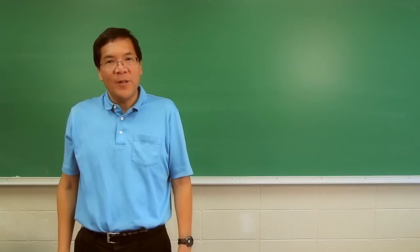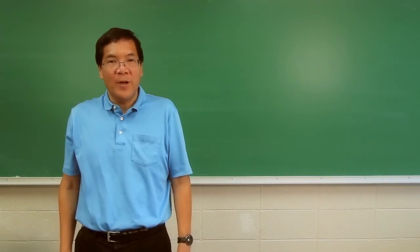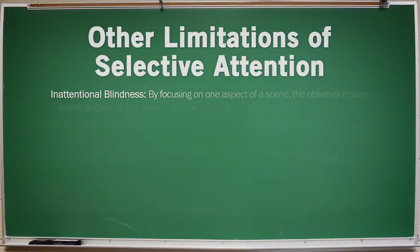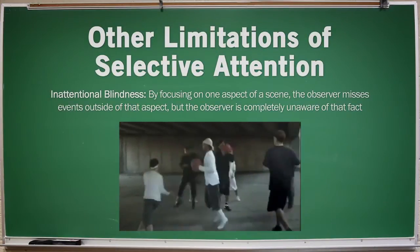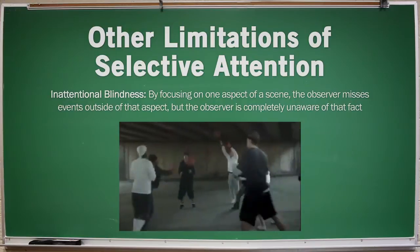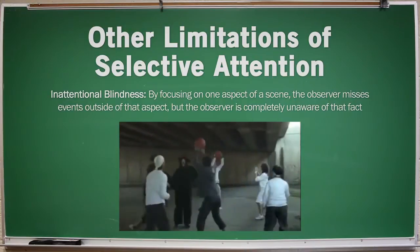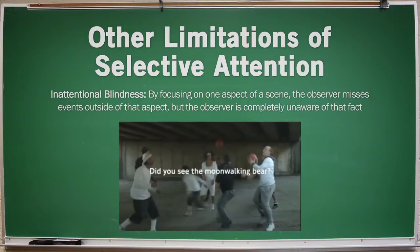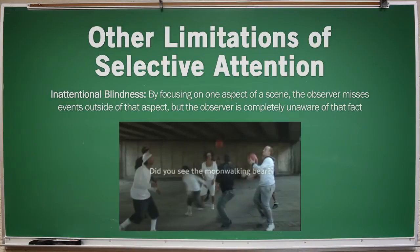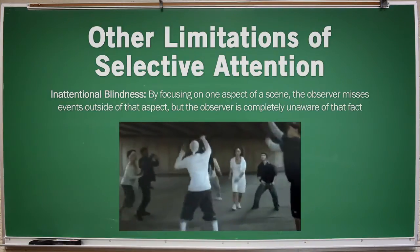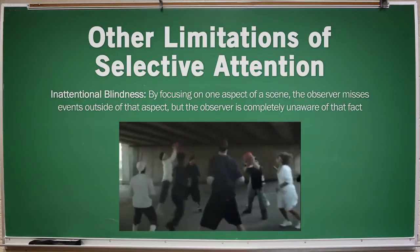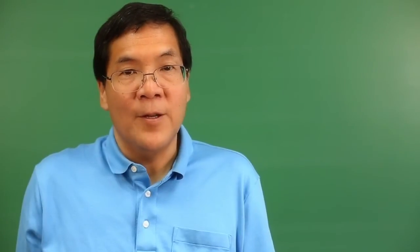Two phenomena related to selective attention that teachers should be aware of are inattentional blindness and attentional blink. You've probably seen videos on inattentional blindness where your attention is focused on one task and you completely miss something outrageous outside of your focus. The important point is that we miss a lot of information outside of our awareness, but we're unaware we missed it — we believe we've seen everything. So students who are distracted are unaware of how much information they've missed. This is why students often think they're good at multitasking.